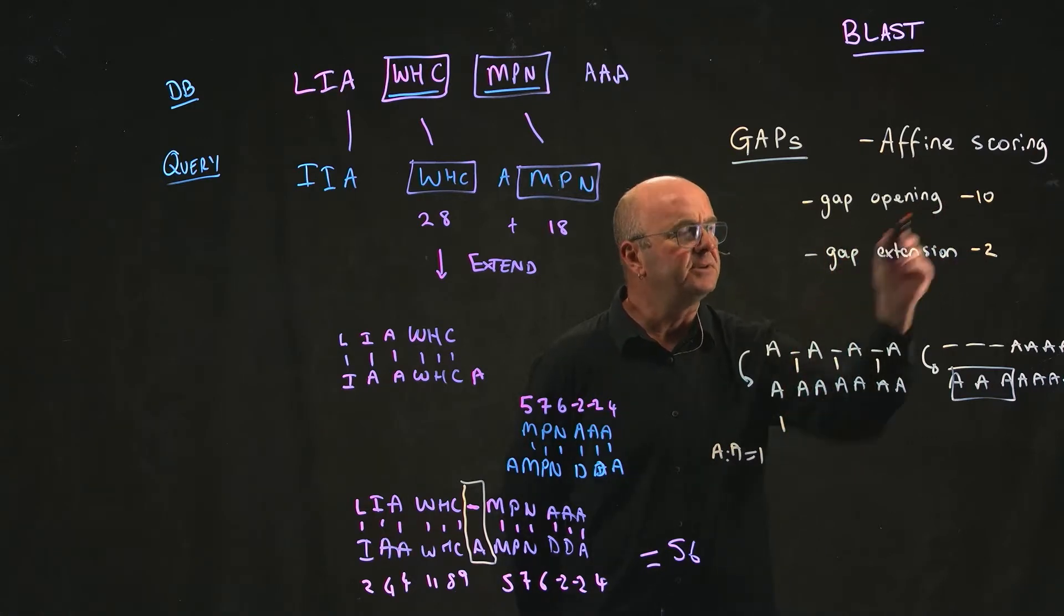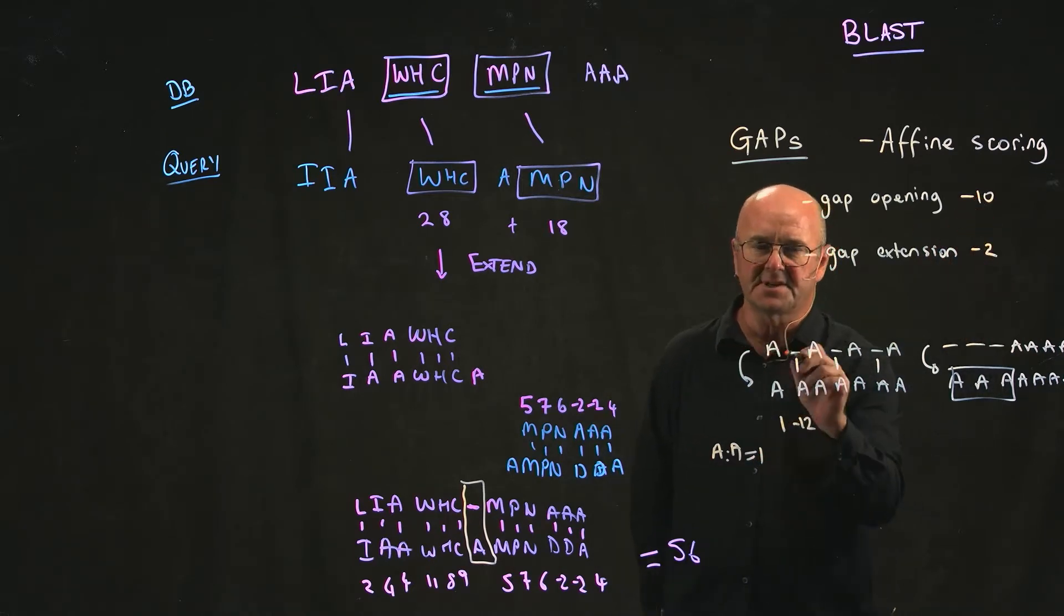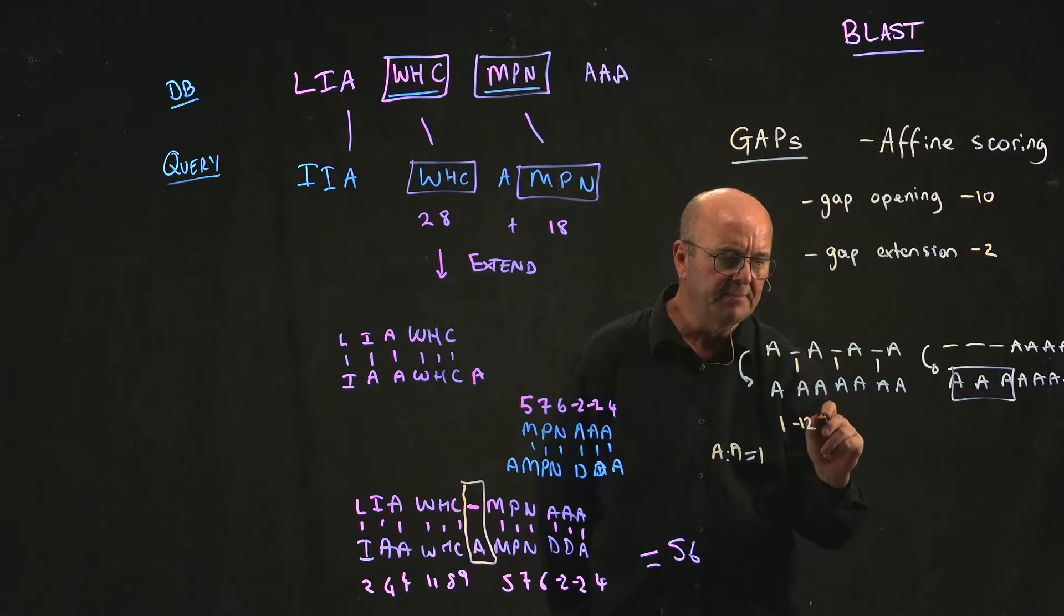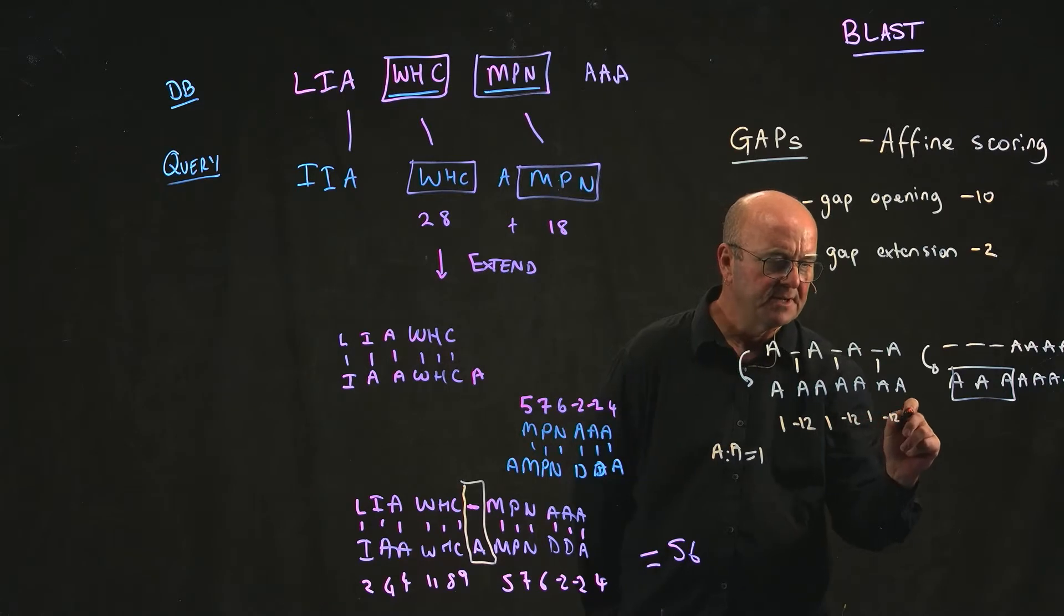Then we would get a score of minus 10 to open the gap and minus 2 for the first insertion we made. And then we get a score of plus 1. Then we get a score of minus 12 plus 1, minus 12 plus 1.